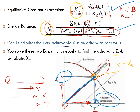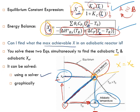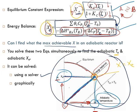To find Te and Xe, we can either use a solver — equating the right-hand sides of both equations and solving — or we can solve graphically. At the intersection point, the conversion equals the equilibrium conversion and the temperature is the adiabatic equilibrium temperature. Both methods are valid.